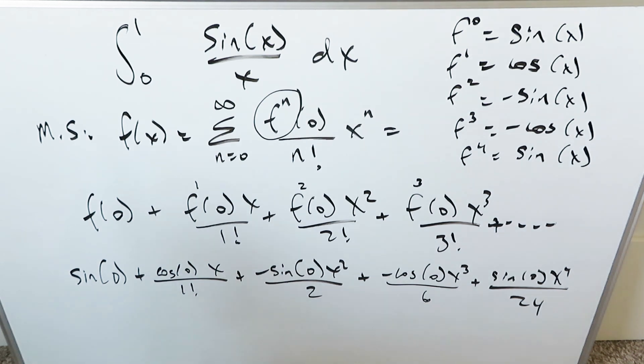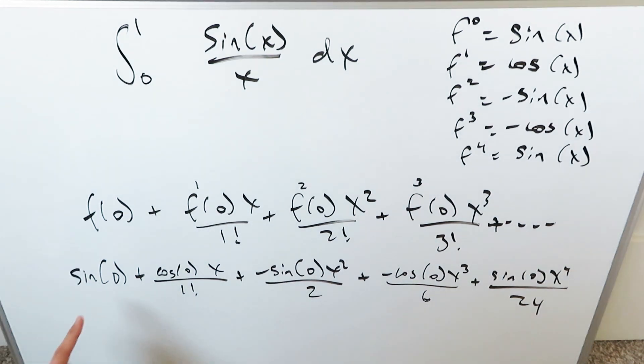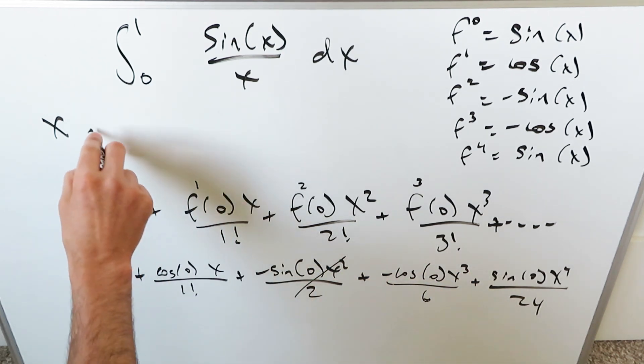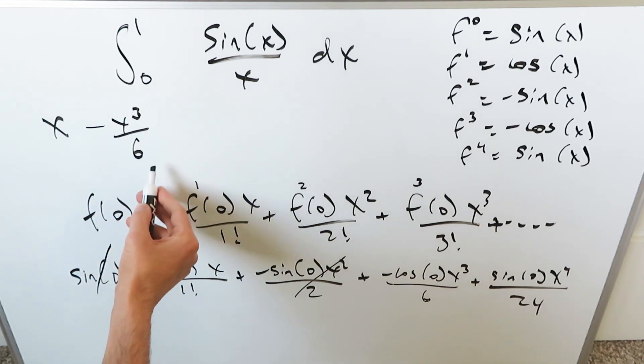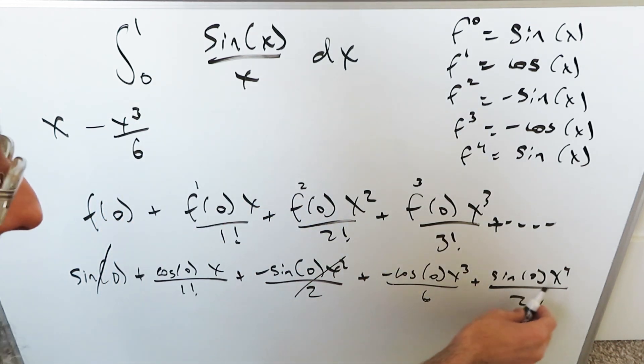I'll bring out the answer for you. Sine of zero goes away. Cosine of zero is 1 times x, so I have an x. Sine of zero is zero - this goes away. Cosine of zero is 1, with this minus becomes minus x cubed over 6, or you can say 3 factorial, but I'll keep it as is. Then this is zero.